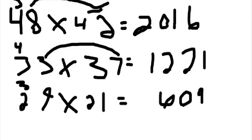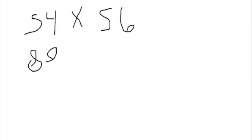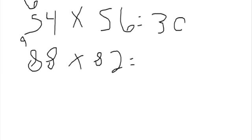Alright, let's do two more problems. 54 times 56, and 88 times 82. Okay, so let's go ahead and add the numbers that we're going to multiply. So 5 times 6 equals 30, and 4 times 6 equals 24. That's your answer.